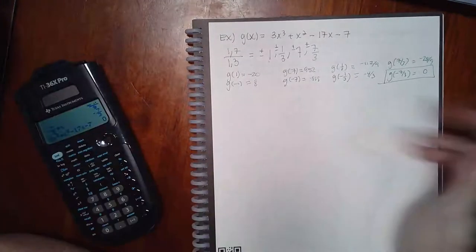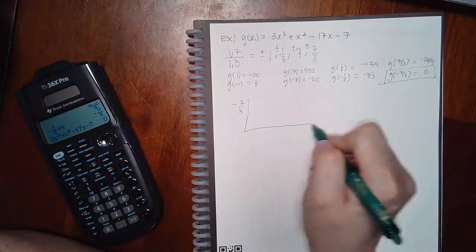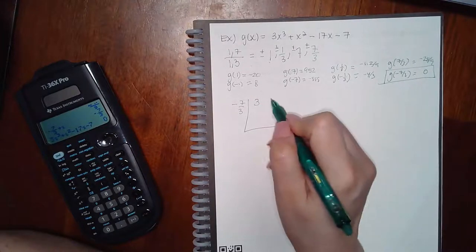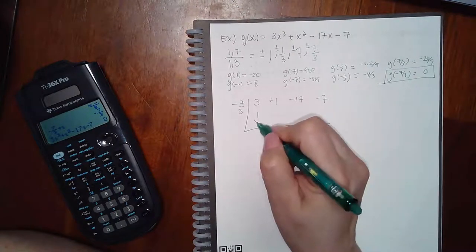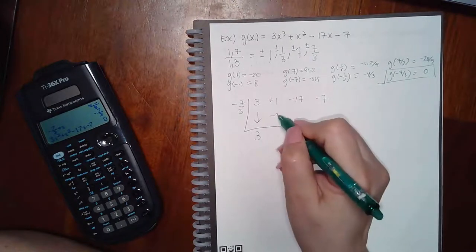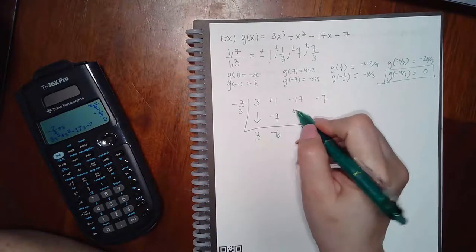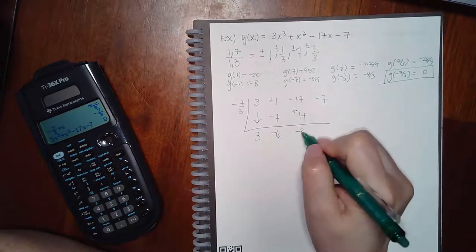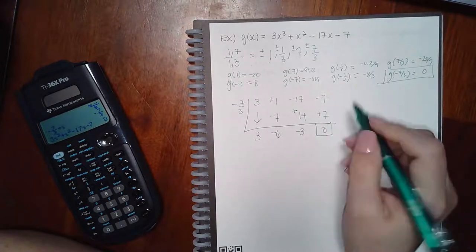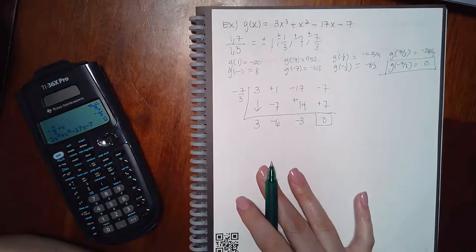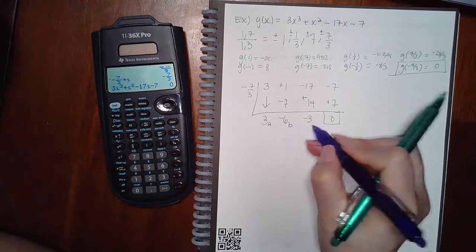Okay, so we're going to go ahead and put negative 7 thirds outside the synthetic division. We have 3, positive 1, negative 17, negative 7. So I get negative 7, I get negative 6, and multiply those I'm going to get a positive 14, negative 3, positive 7, and 0. Again, if you need help with the multiplying, you can always use your calculator, right? So here are my A, B, and C.